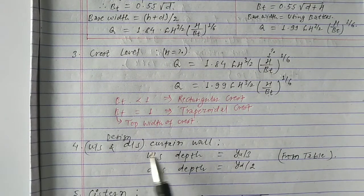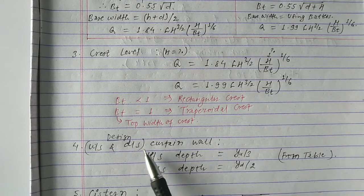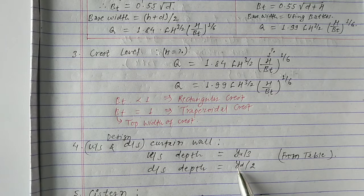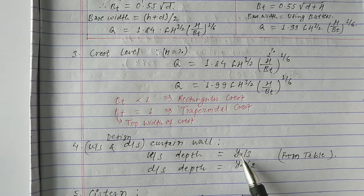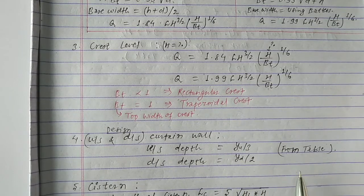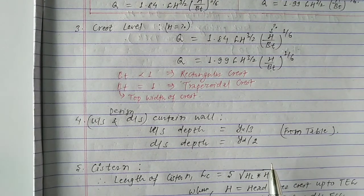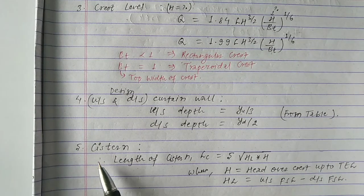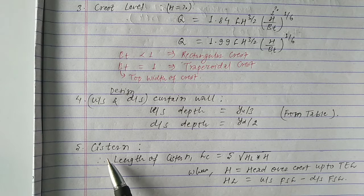Step 4 is the design of the cutoff wall — both the upstream and downstream cutoff walls. For the upstream cutoff wall, the depth is taken as y/3, and for the downstream cutoff wall, the depth is the downstream distance divided by 2. The upstream distance is also divided by 3. These values are taken from a table, as discussed in the previous video and as we will further describe during the numerical.